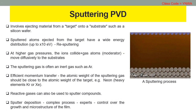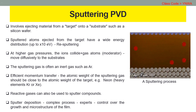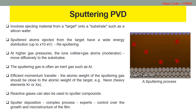Sputter deposition is a PVD method of thin film deposition by sputtering. In detail, sputtering involves ejecting material from a target that is a source onto a substrate such as a silicon wafer. Re-sputtering is re-emission of the deposited material during the deposition process by ion or atom bombardment. Sputtered atoms ejected from the target have a wide energy distribution, typically up to tens of electron volts. The sputtered ions, typically only a small fraction of the ejected particles, are ionized on the order of 1%, and can ballistically fly from the target in straight lines.